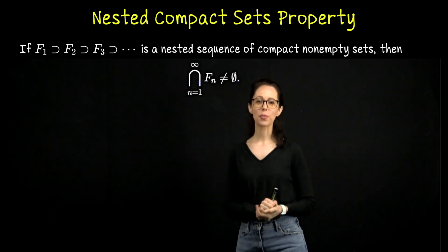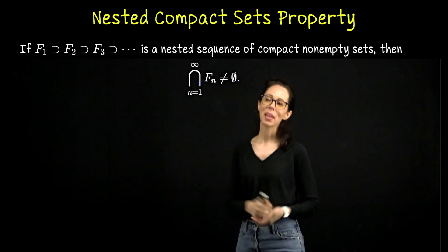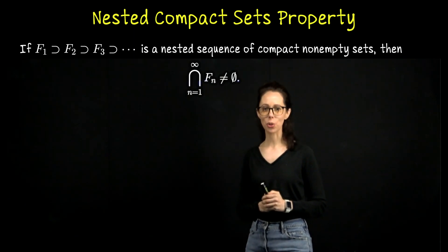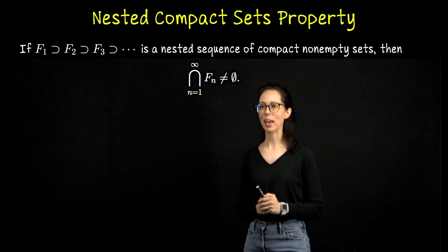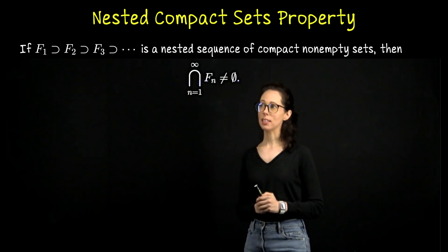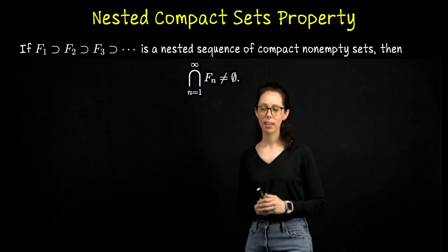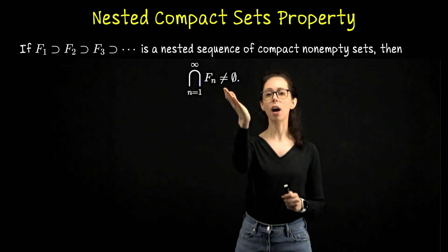This video is going to be a short proof of the nested compact set property. This is a fun exercise to do as we wrap up our study of compact sets. What it says is that if we have a nested family of compact sets, then their intersection is non-empty.